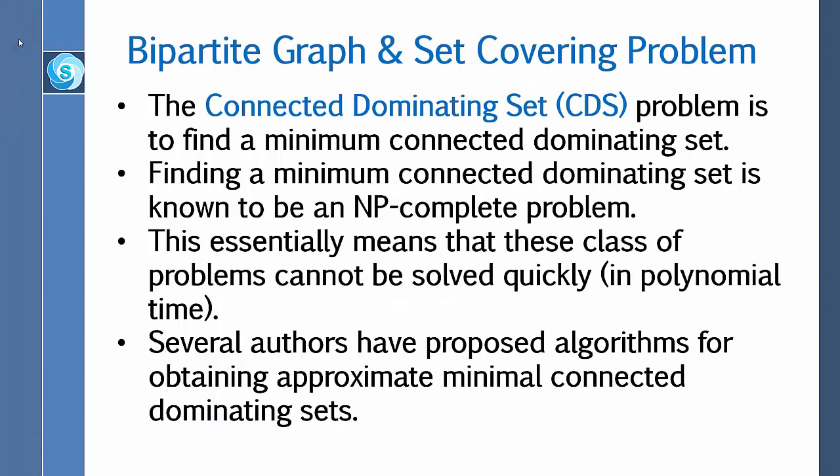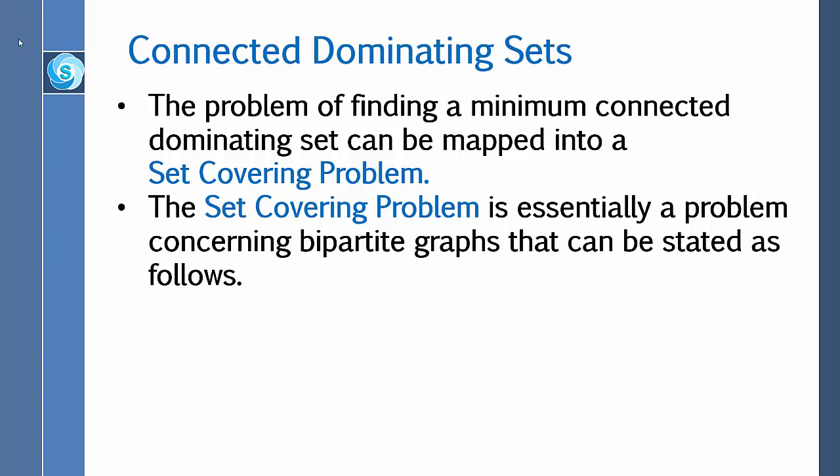First, let me talk about bipartite graphs and the set covering problem, because they are closely related. The connected dominating set problem is to find a minimum connected dominating set. Finding a minimum connected dominating set is known to be an NP-complete problem, meaning these problems cannot be solved quickly in polynomial time. Several authors have proposed algorithms for obtaining approximate minimal connected dominating sets. The problem can be mapped into a set covering problem, which is essentially a problem concerning bipartite graphs.